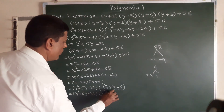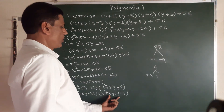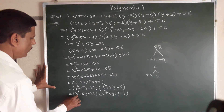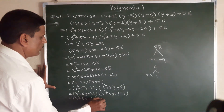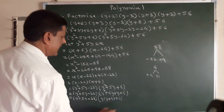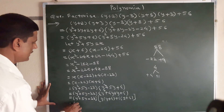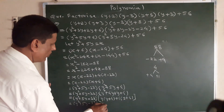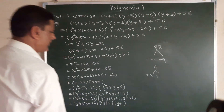We can factorize the second bracket y squared plus 5y plus 4. There are no integer factors of 22 whose difference is 5, so the first bracket stays as is. For the second bracket, factors of 4 that add to 5 are 4 and 1. So y squared plus 4y plus y plus 4 gives y(y plus 4) plus 1(y plus 4), which equals (y plus 4)(y plus 1).